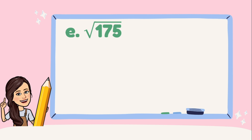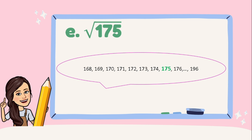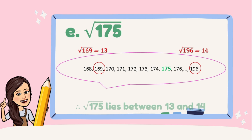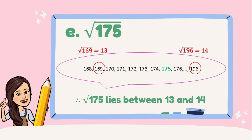For our last example, we have square root of 175. Obviously, 175 is not a perfect square integer. So, we will just apply the same process we did with the previous examples. By looking at this illustration, which among these numbers are the two perfect square integers where 175 is in between of them? We have 169 and 196. The principal root of √169 is 13 and the principal root of √196 is 14. Then, √175 lies between 13 and 14.